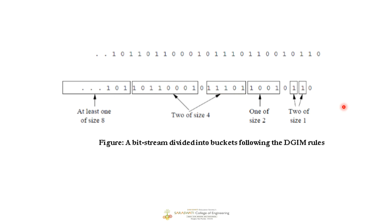As discussed, we can have either one or two buckets of the same size. Here I have two buckets of size 1, one bucket of size 2, and two buckets of size 4 — we cannot have three buckets of the same size. The size of buckets increases as we move from left to right: size 1, size 1, size 2, size 4, size 4, and the last bucket of size 8. The sizes are always in increasing order.